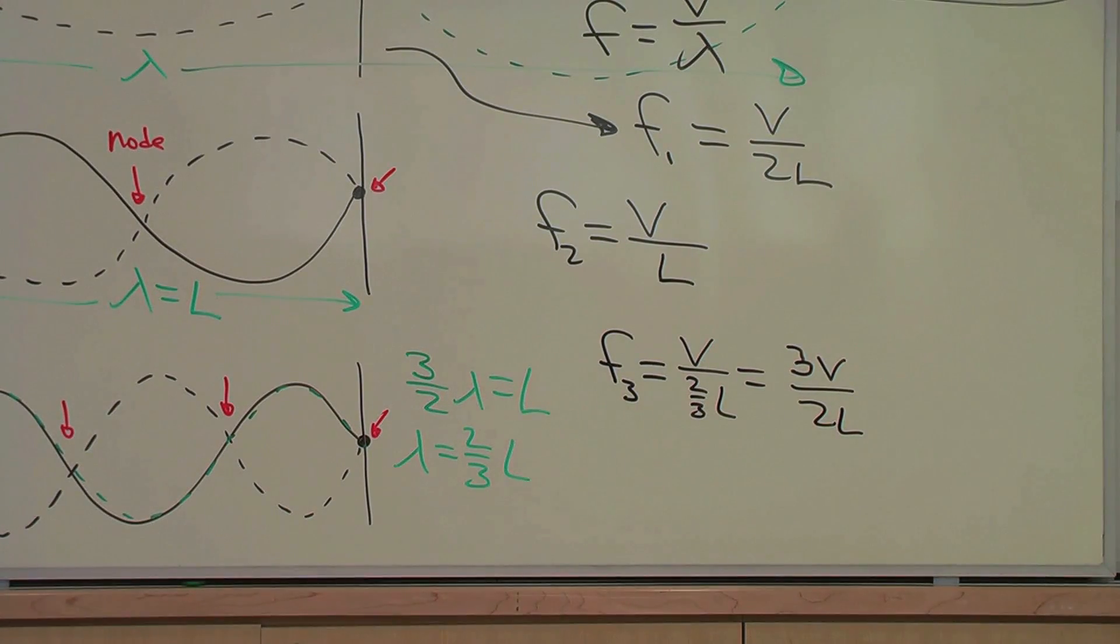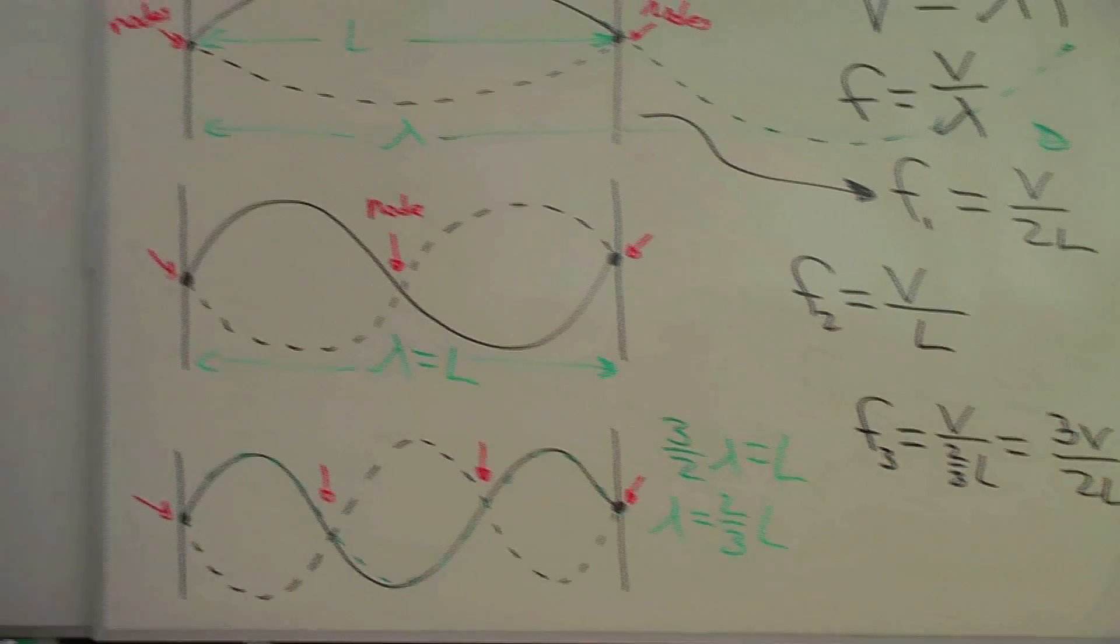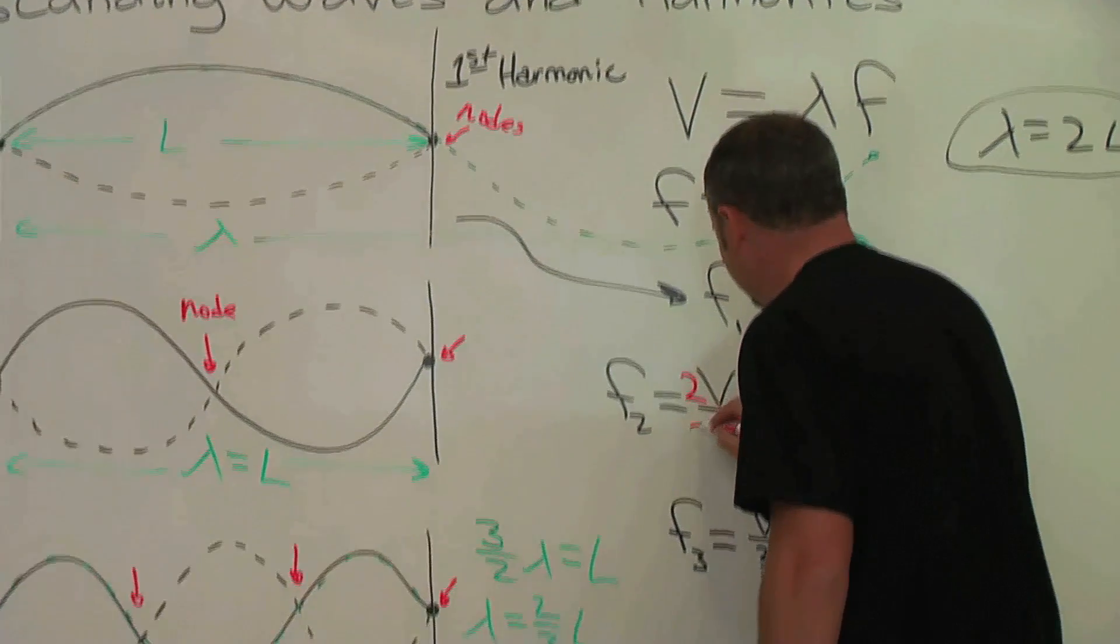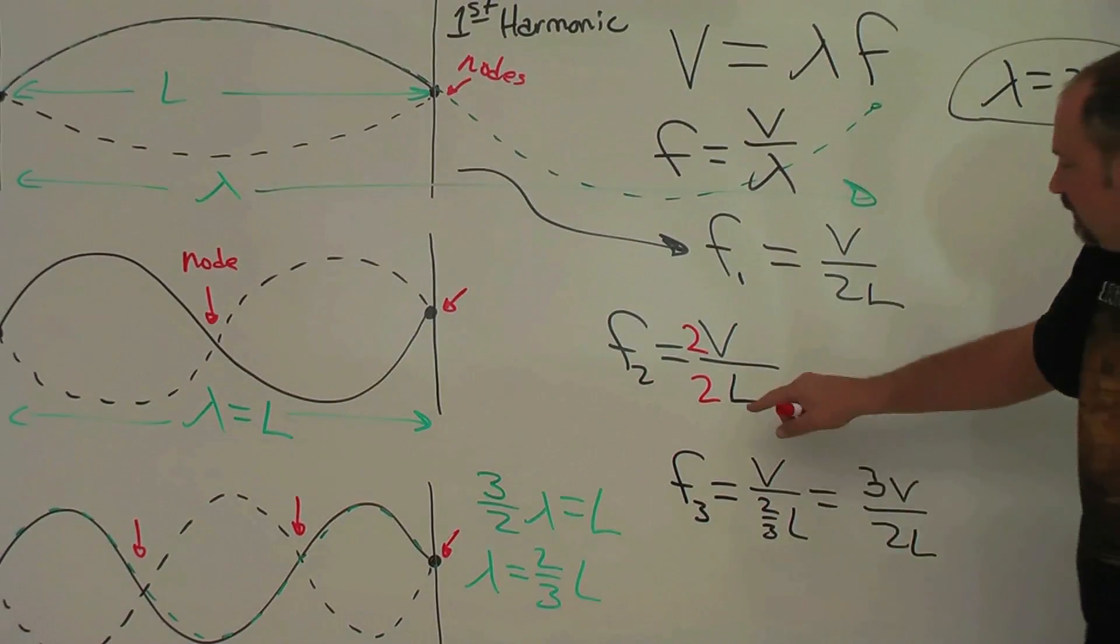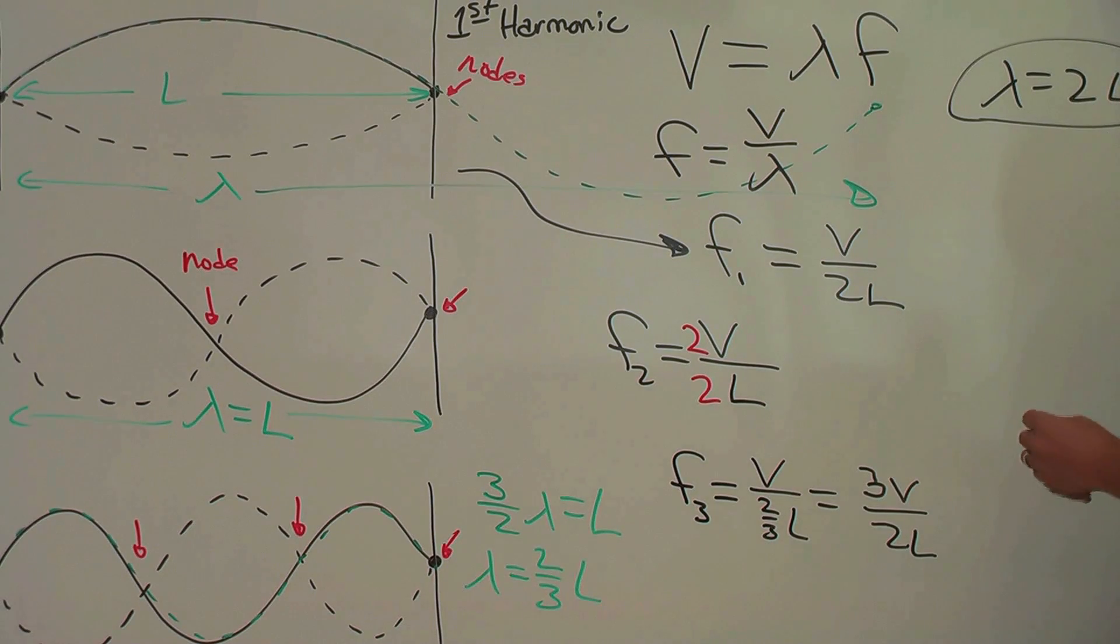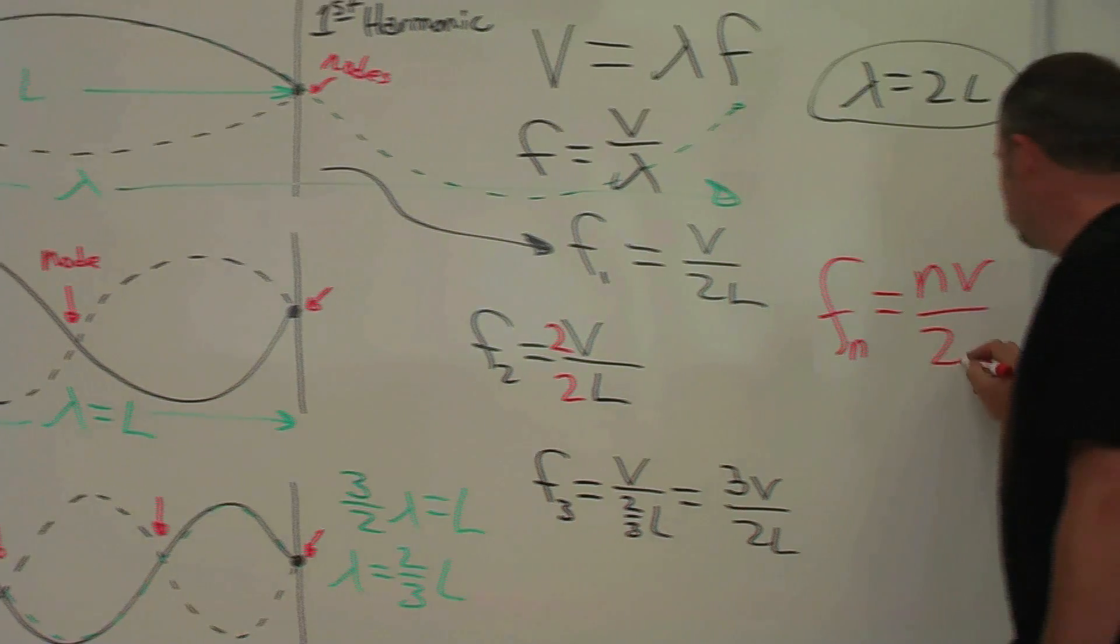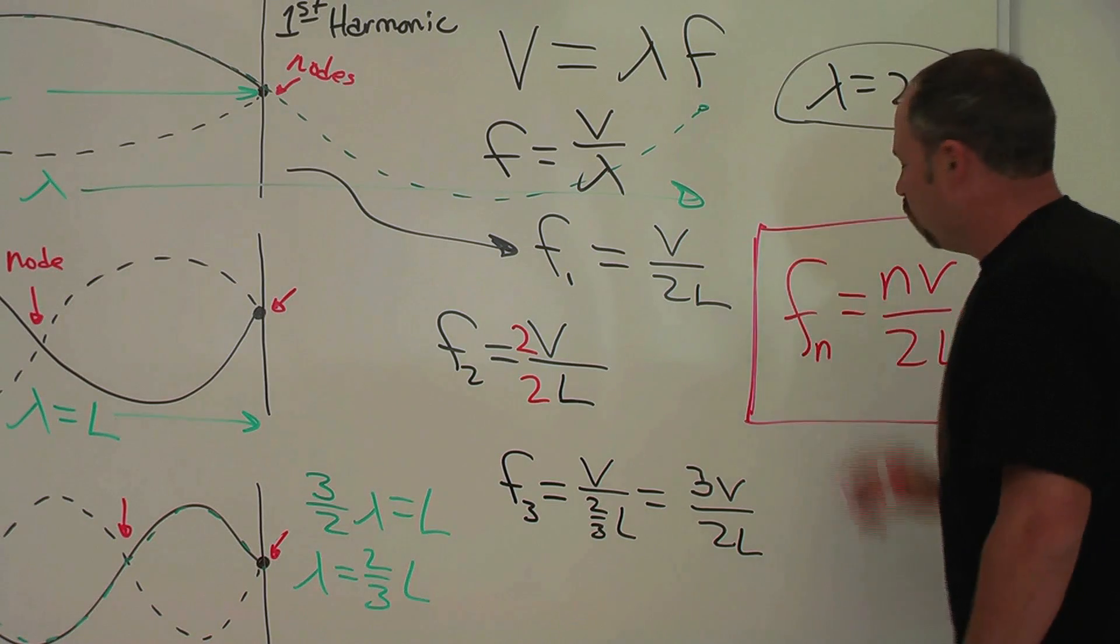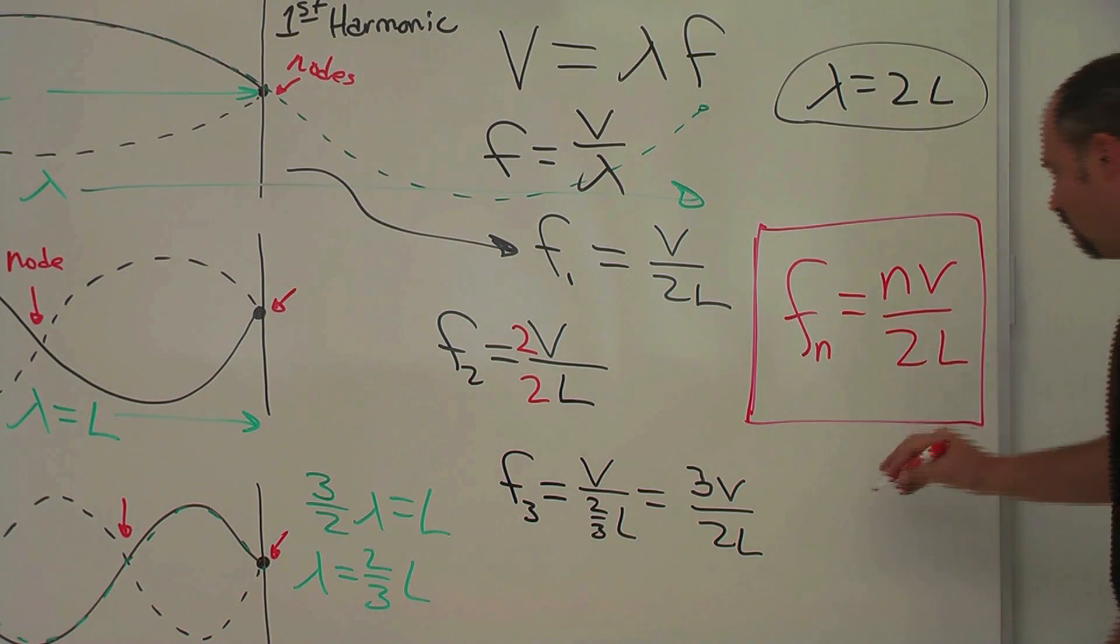I think we see a pattern forming. If we put a 2 here and a 2 there, we see that we get the frequency is of the form Fn equals nV over 2L, where n is the number of the harmonic.